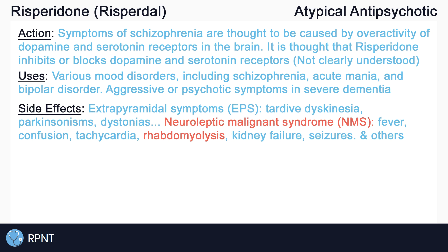Risperidone can cause extrapyramidal symptoms, or EPS. EPS are drug-induced movement disorders, including tardive dyskinesia, which is a slow onset of involuntary movements like sticking out the tongue or smacking of the lips; Parkinsonisms, which are symptoms found in Parkinson's disease like tremors and rigidity; and other dystonias.